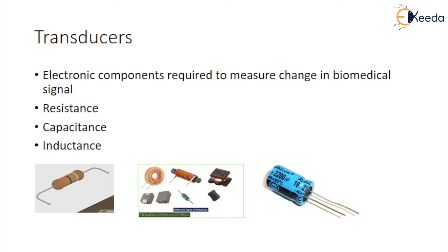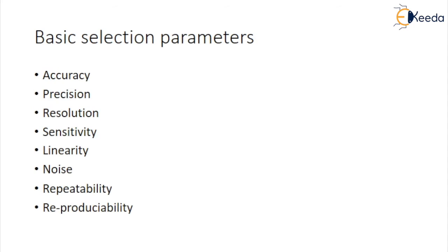Piezoelectric and photoelectric transducers are commonly used for the measurement of biomedical signals. The basic parameters to be considered while selecting proper transducers are the static characteristics. The first one is accuracy — it is expressed as a percentage of full-scale output, and is also defined as the algebraic difference between the reference value and the measured value.